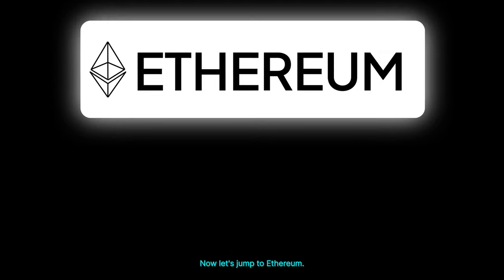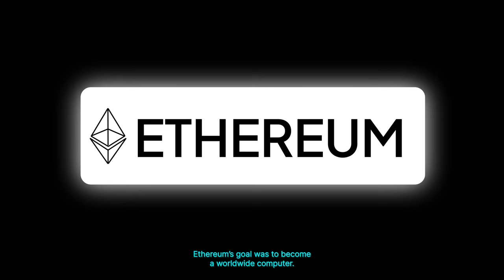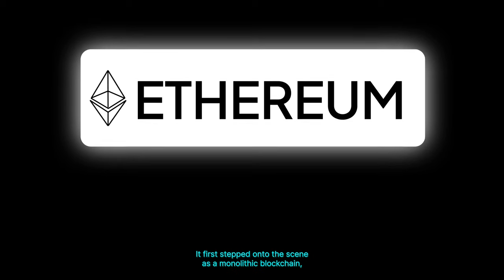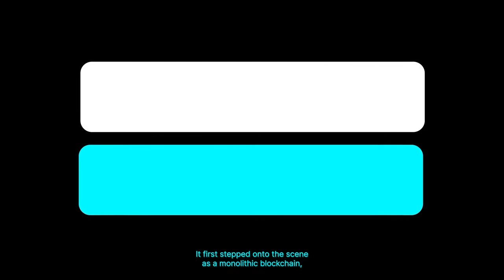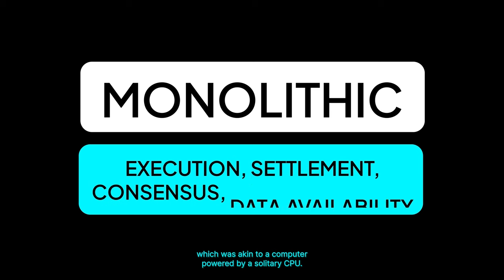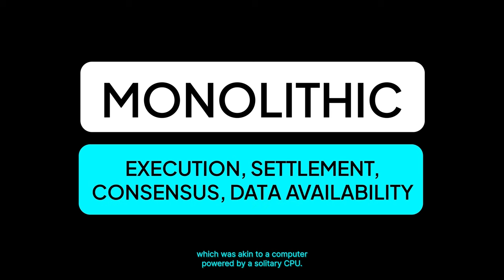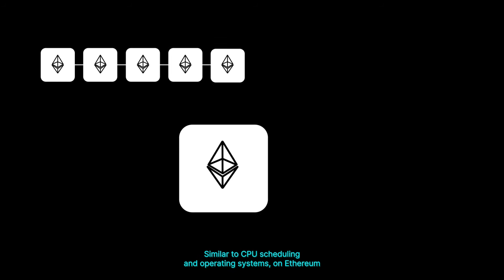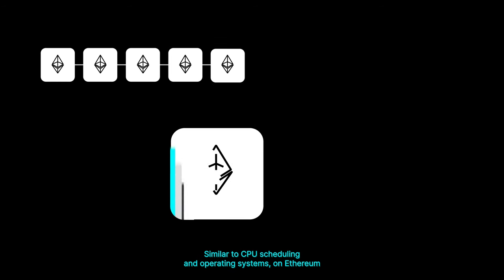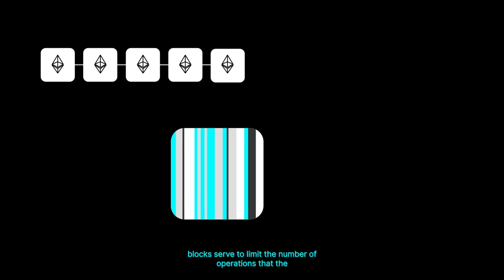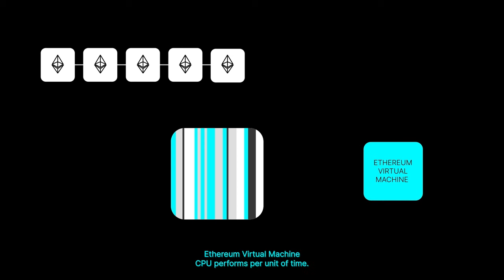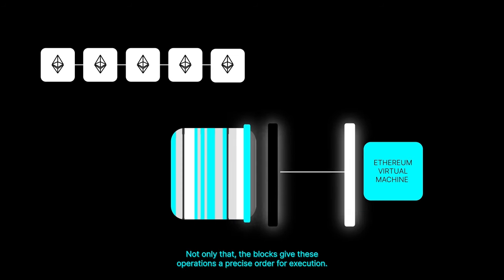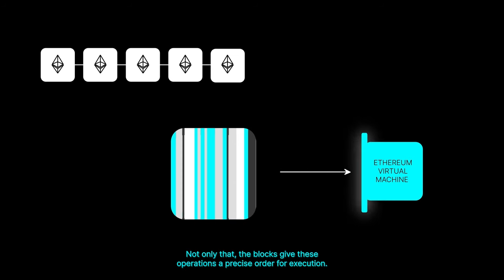Now, let's jump to Ethereum. Ethereum's goal was to become a worldwide computer. It first stepped onto the scene as a monolithic blockchain, which was akin to a computer powered by a solitary CPU. Similar to CPU scheduling and operating systems, on Ethereum, blocks serve to limit the number of operations that the Ethereum virtual machine's CPU performs per unit of time. Not only that, the blocks give these operations a precise order for execution.